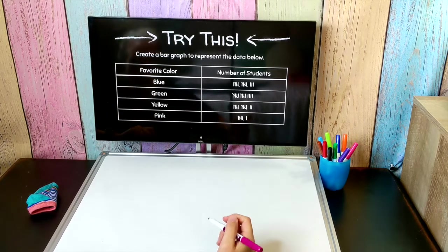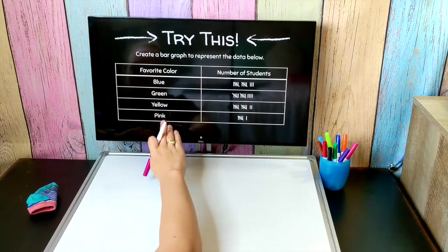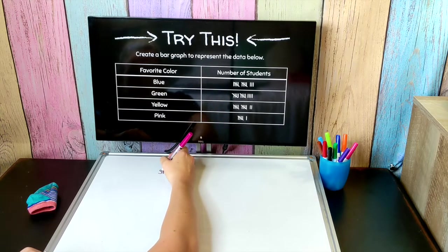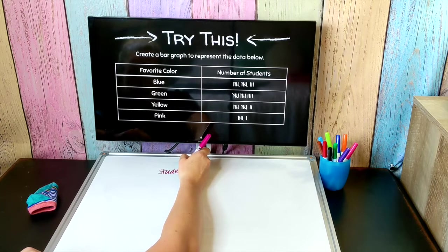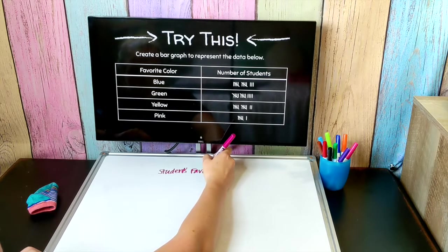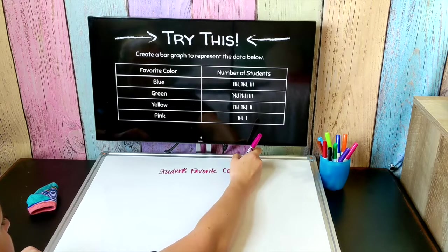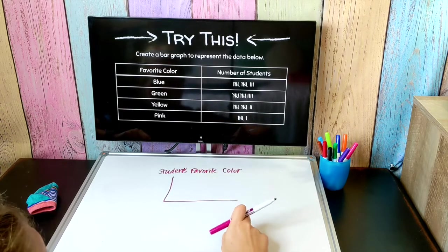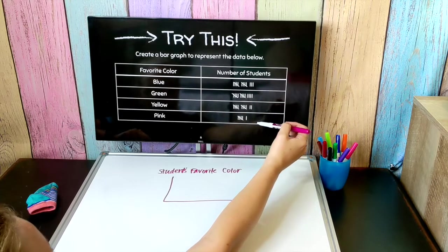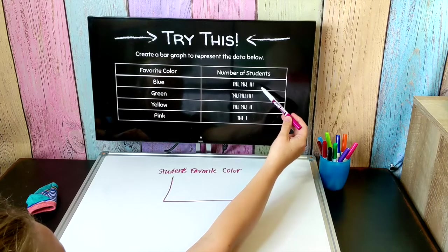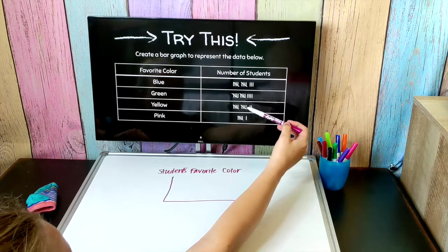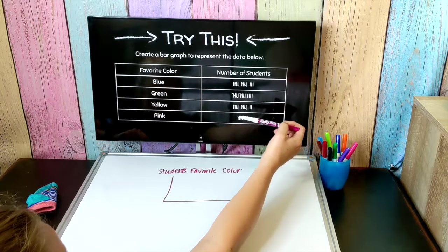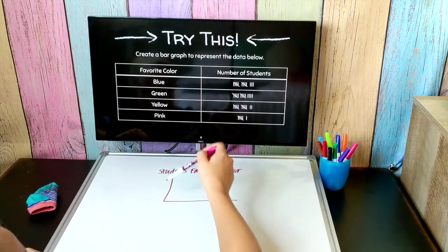The information I'm given here is the number of students that chose these different colors as their favorite. So I'm going to give my graph a title and it's going to be students' favorite colors. Now I need to decide on what scale I'm going to use. When I look over here I've got some pretty large data points. I've got 13, 5, 10, 14. So it would be a good idea to not count by ones. I don't really want to draw 14 individual lines.